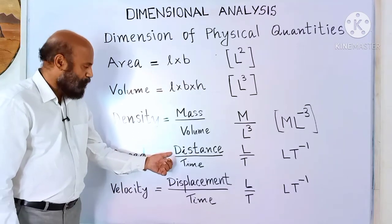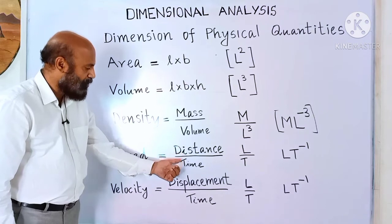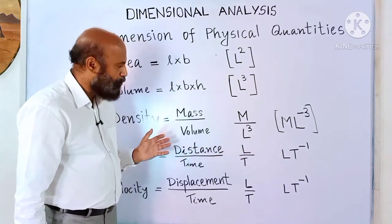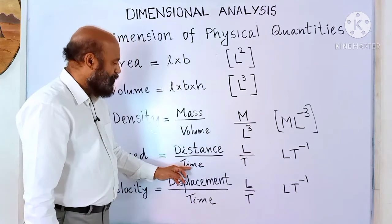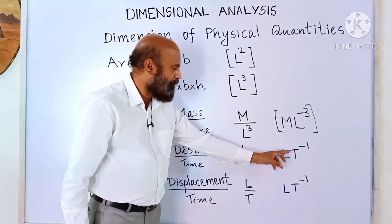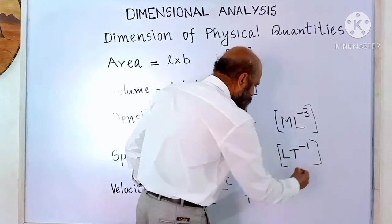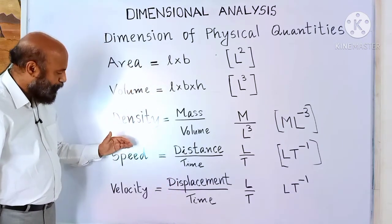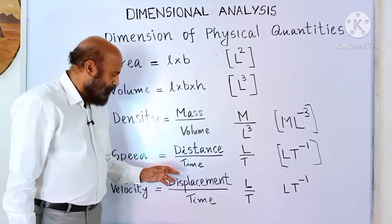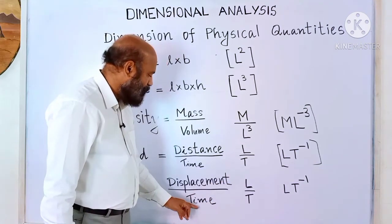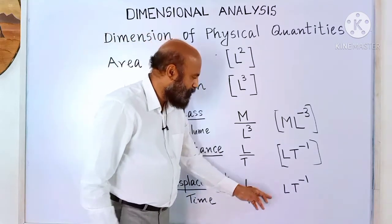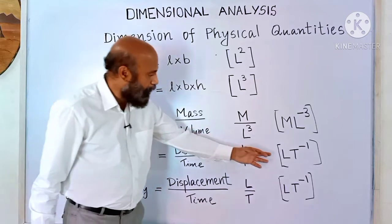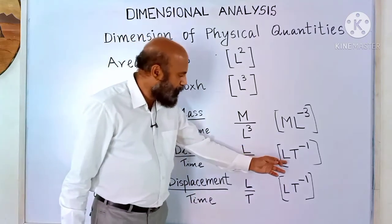Speed. Distance divided by time. Distance is the length between two points, so its dimension is capital L. Time dimension is T. So speed dimension is L by T, which can be written as L T raised to minus 1. Velocity is displacement by time. Displacement dimension is capital L, time dimension is capital T, so it is also L T raised to minus 1.